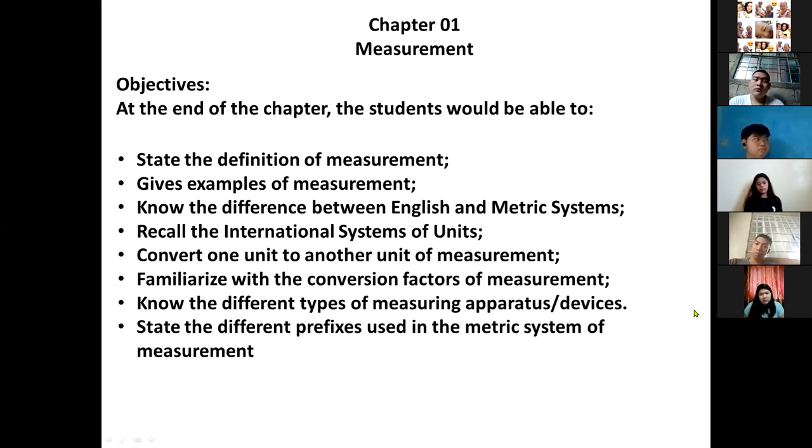Like classical conditioning, we condition ourselves, and someday it will become routine until you memorize the route. Know the different types of measuring apparatus or devices that we can use during experimentation. State the different prefixes used in the metric system of measurement. For example, we have kilo, mega, atto, femto, pico, deci, deka, hecto. Those are the prefixes. For example, if the unit is meter, the prefixes are kilometer, centimeter, decimeter, hectometer, megameter. Like bytes: gigabytes, kilobytes, megabytes.